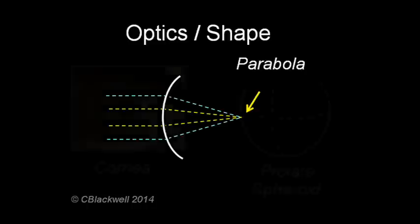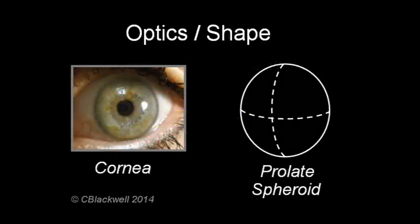It turns out, the cornea is close to, but not exactly, a parabola. Technically, it is a prolate spheroid, steeper in the center, flatter at the edges, with a small amount of positive spherical aberration.